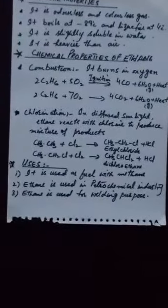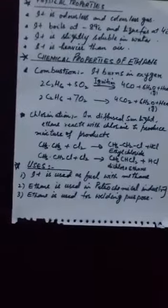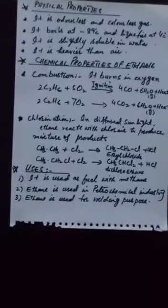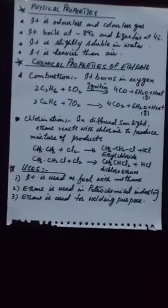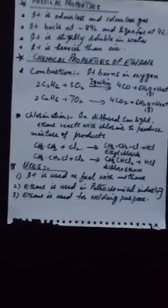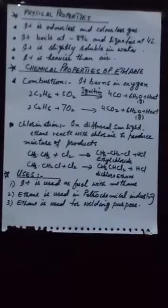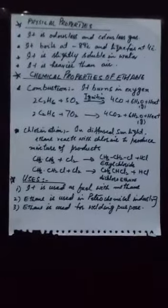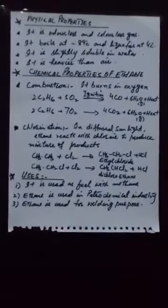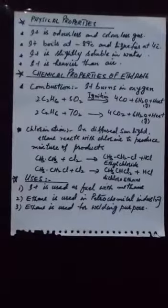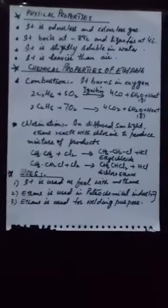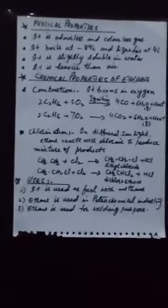Then in the last, we will discuss about the uses. Ethane is used as fuel with methane in the natural gas. Second use, ethane is used in petrochemical industries in the preparation of alkenes ethene for polymerization process.